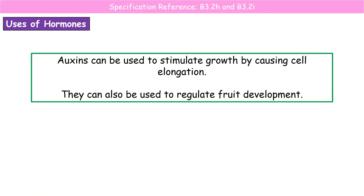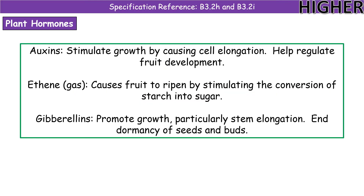The last part of today's booster looks at how we can use plant hormones as humans. Auxins can be used to stimulate growth because they cause cell elongation, and they can also be used for regulating the development of fruit. The three hormones you need to know are: auxins, ethene, and gibberellins. Auxins stimulate growth by causing cell elongation and help regulate fruit development. Ethene is a gas that causes fruit to ripen by converting starches into sugars. Gibberellins promote growth — particularly stem elongation — and importantly they end dormancy of seeds and buds.